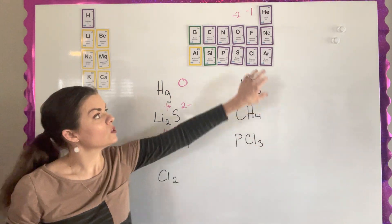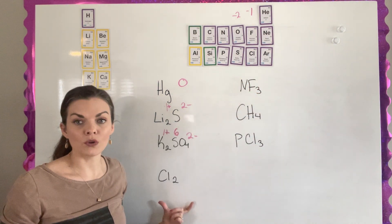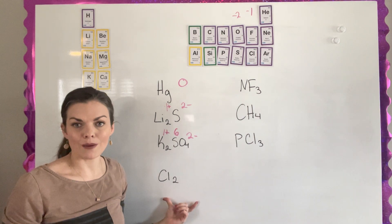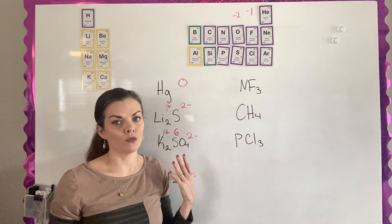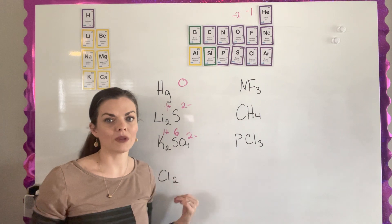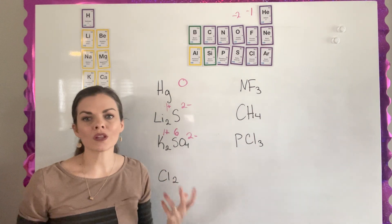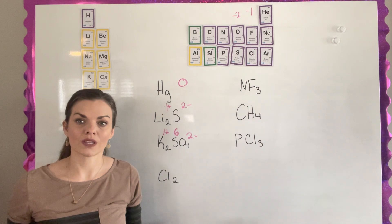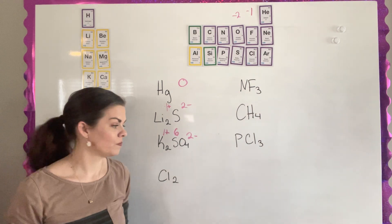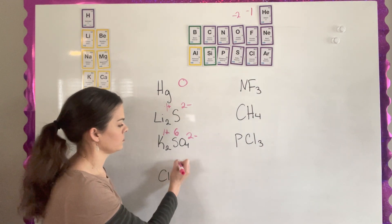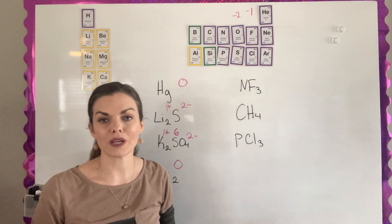For Cl2, we have chlorine in a homonuclear diatomic. Rule number two says homonuclear diatomics have an oxidation state of zero, because one chlorine is not going to pull harder on the electrons than the other — they pull equally.